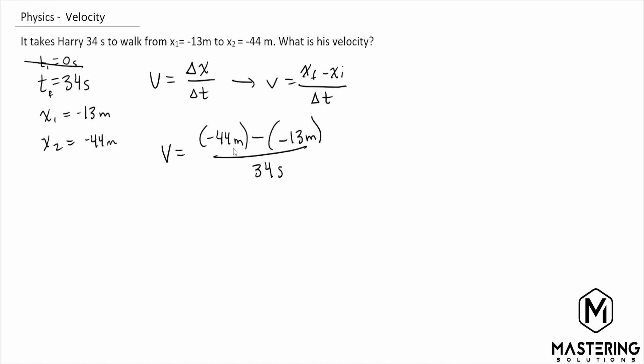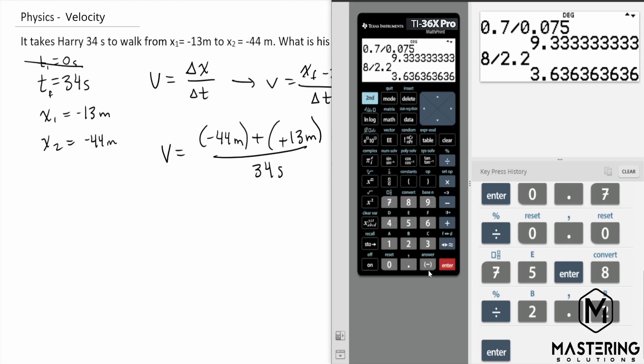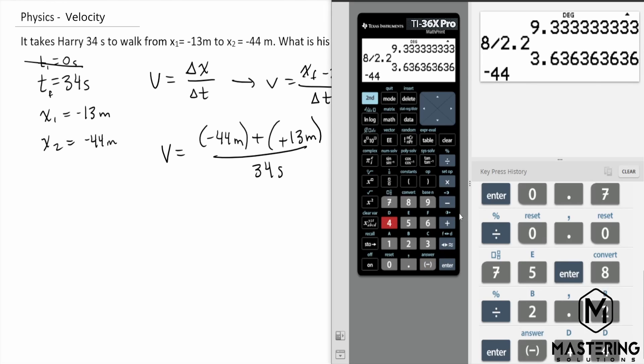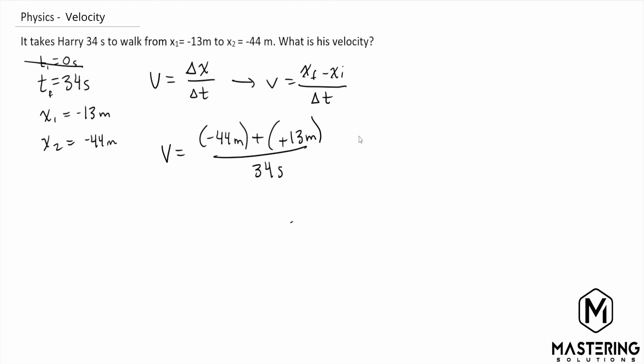Again, they're just trying to make sure you understand it, but the only reason it's confusing is because you have to keep the negatives straight. If we're minusing a negative from something, we're essentially adding it. So negative 44 plus 13 gives us negative 31, so negative 31 meters in 34 seconds.